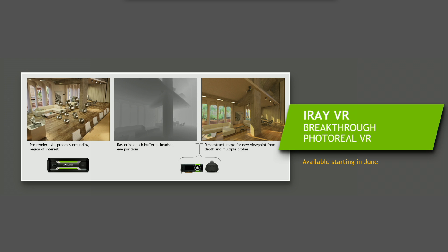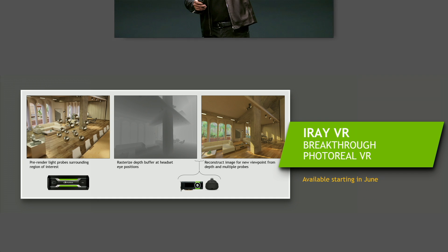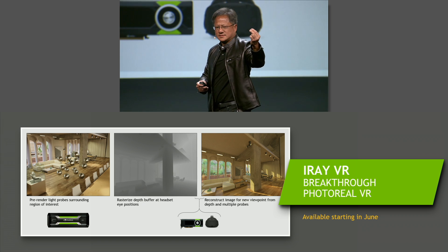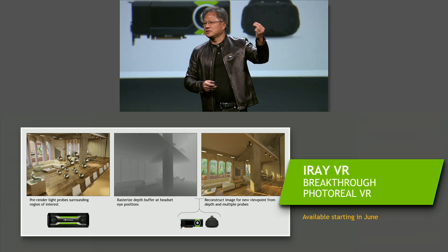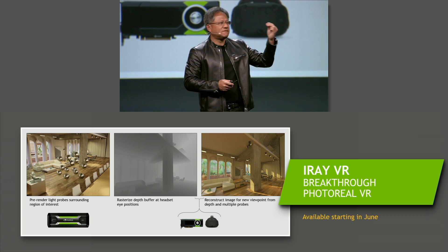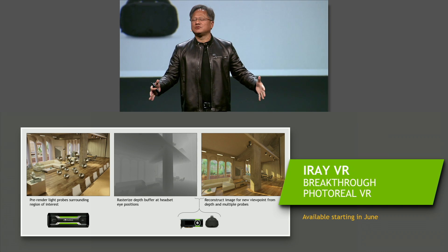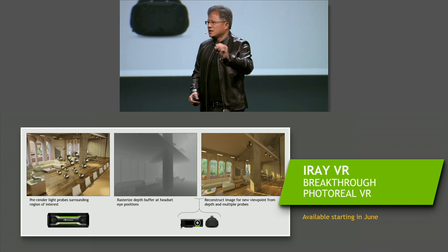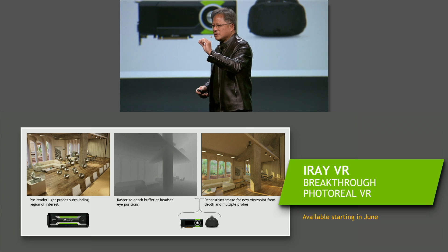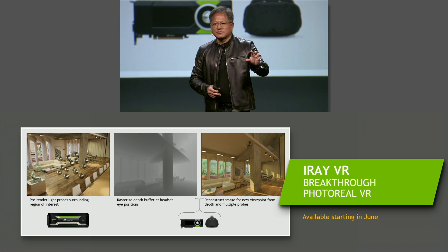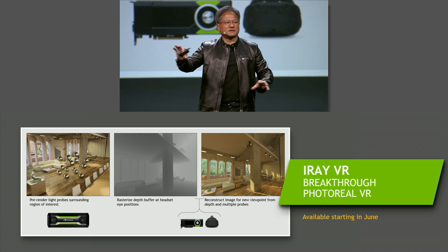So the team created a brand new technology. They basically rendered light probes throughout the area of the room that you would like to interact with. These light probes are essentially entire light fields from that spot — how light would emanate from that spot. Each one of these probes is a 4K render, and each one of these 4K renders takes approximately one hour on one box of 8-GPU server. We render 100 of these probes, which means 100 hours dedicated to rendering the probes that go into this particular photorealistic room.